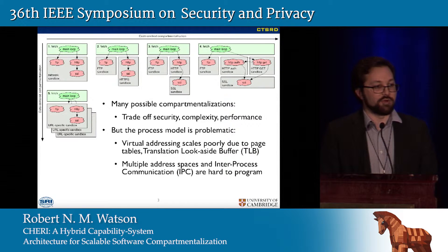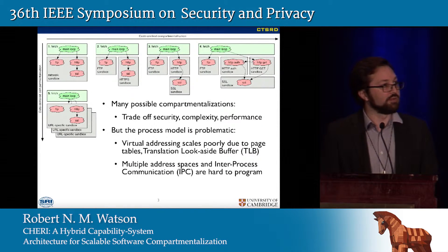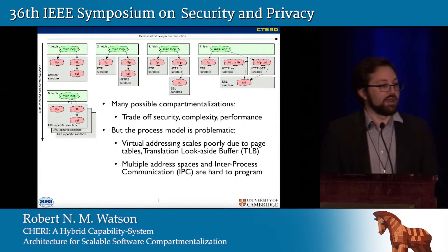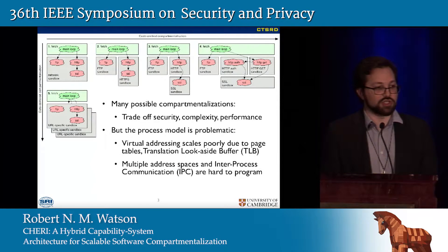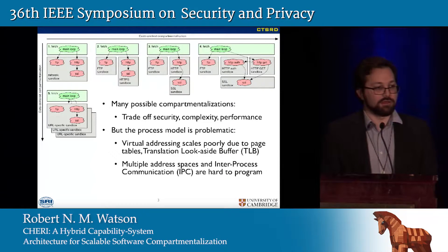If we would like to promote more granularity in compartmentalization — which would give us more resilience to exploited vulnerabilities — then we would really like to be able to have many more compartments. So we might ask the question: how could we accomplish that using architectural features?